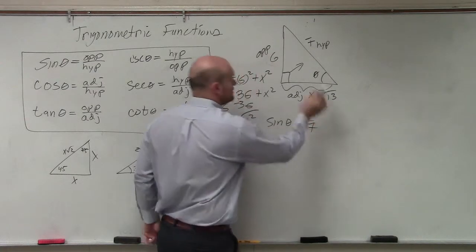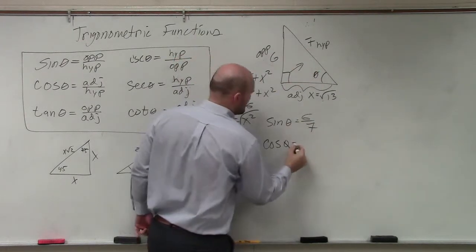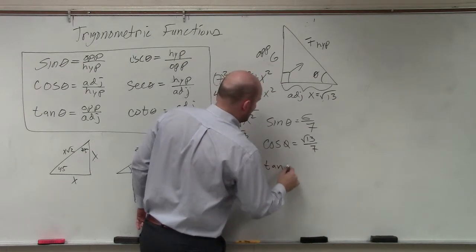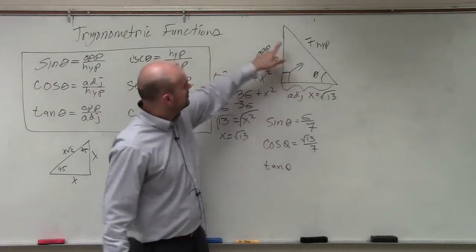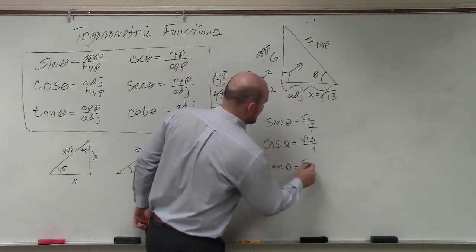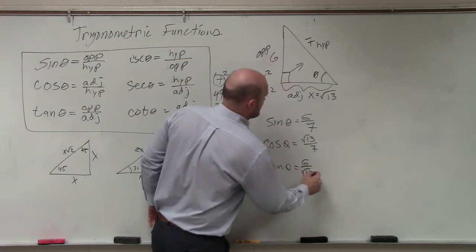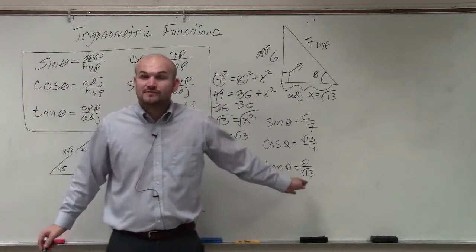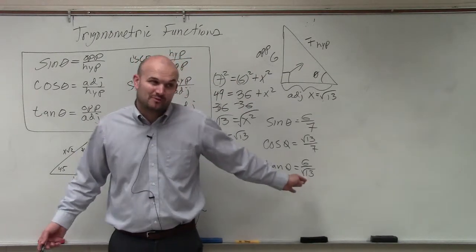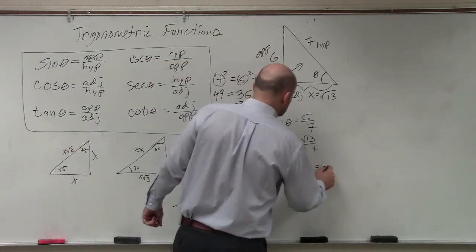Cosine of theta, adjacent over hypotenuse. So that's 6 over the square root of 13. However, we don't want to leave the square root of 13 in the denominator. So I'm going to rationalize the denominator without showing my work. Let's see if we can do it in our heads.